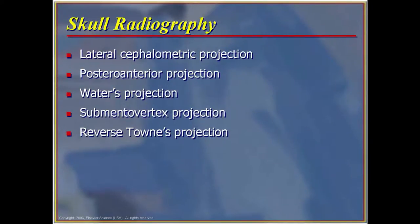Other projection types include posterior-anterior projections, the Waters projection, submental vertical projections, and the reverse Towne projection. Many of these are used for post-trauma diagnosis by the oral surgeon and for evaluating extensive tumors and cysts outside of normal dental positions. The submental vertical x-ray and the routine Towne radiograph are used frequently in trauma cases.